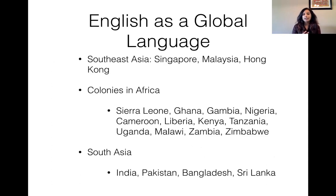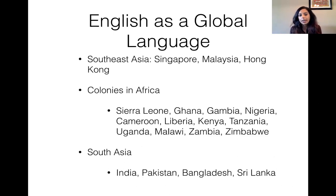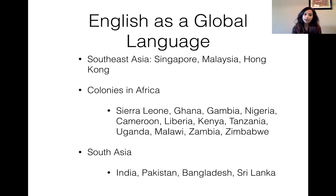You also have areas that are not predominantly English speaking today — they speak English as a second language — but these also contribute to English as a global language. These include Southeast Asia: Singapore, Malaysia, Hong Kong; colonies in Africa: Sierra Leone, Ghana, Gambia, Nigeria, Cameroon, Liberia, Kenya, Tanzania, Uganda, Malawi, Zambia and Zimbabwe; and South Asia: India, Pakistan, Bangladesh and Sri Lanka.